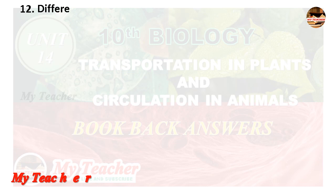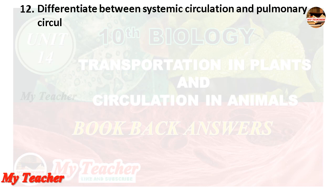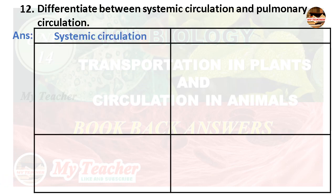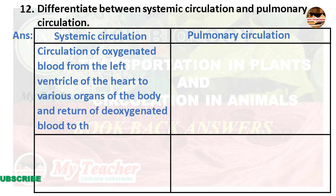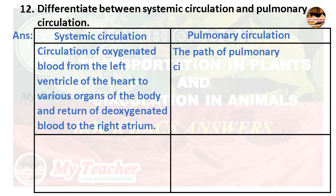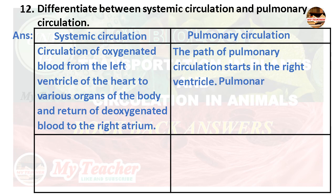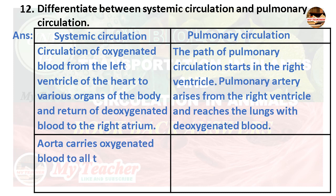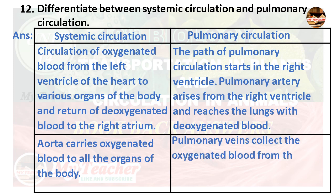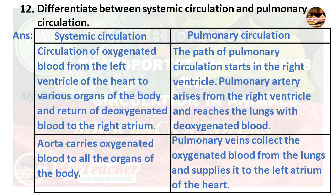Twelfth question: Differentiate between systemic circulation and pulmonary circulation. Systemic circulation: Oxygenated blood flows from the left ventricle to various organs of the body, and deoxygenated blood returns to the right atrium via the aorta. Pulmonary circulation: Starts in the right ventricle; the pulmonary artery carries deoxygenated blood to the lungs, and pulmonary veins collect oxygenated blood from the lungs and supply it to the left atrium.